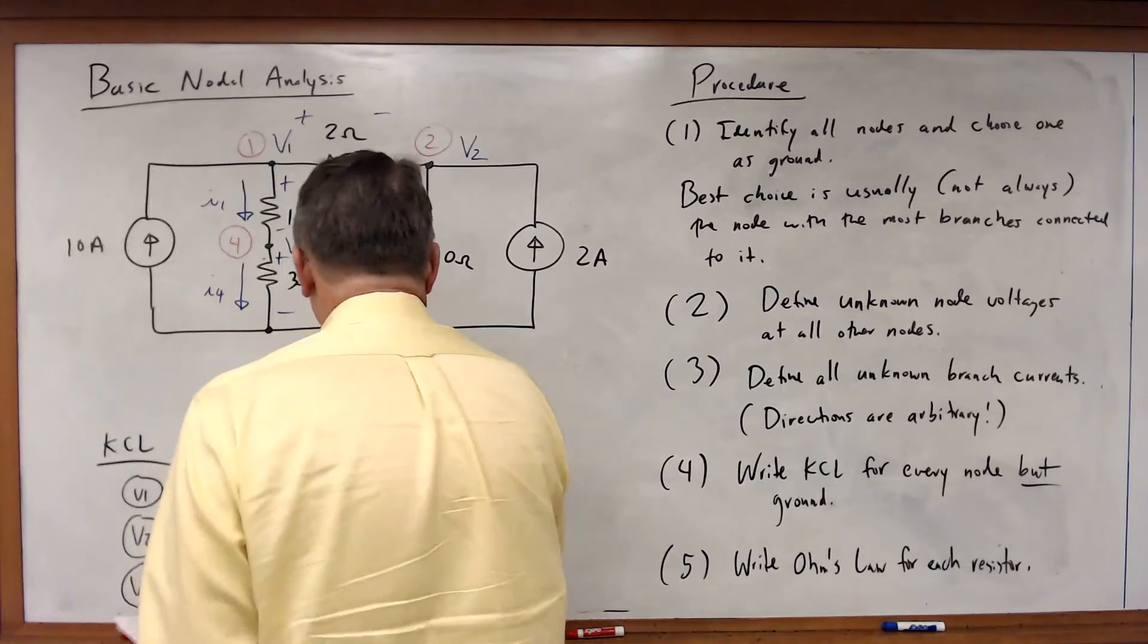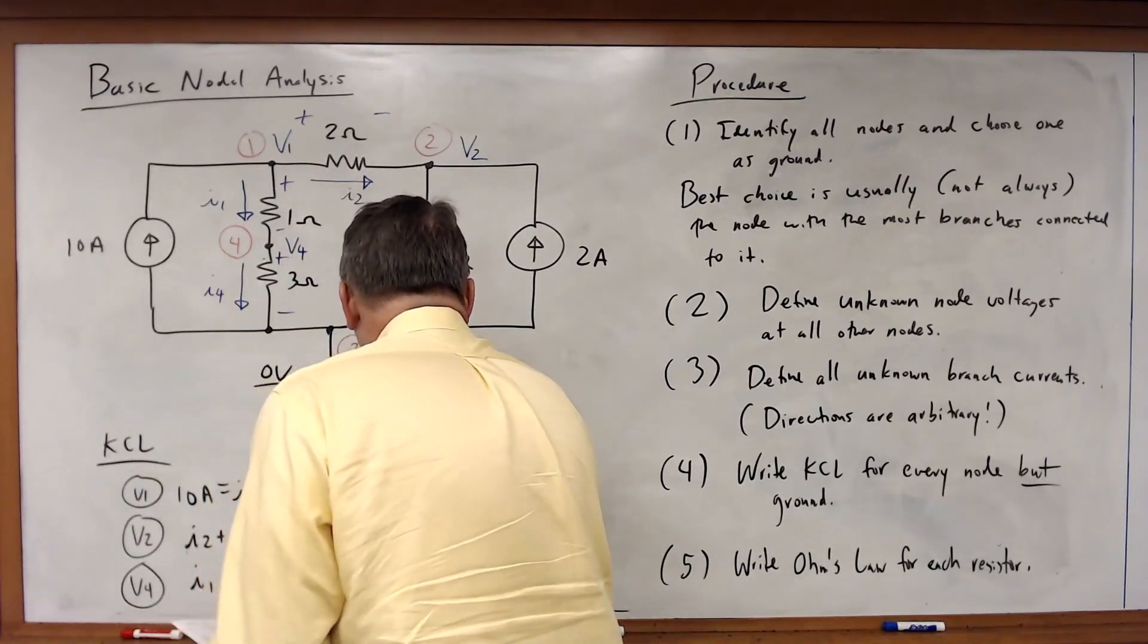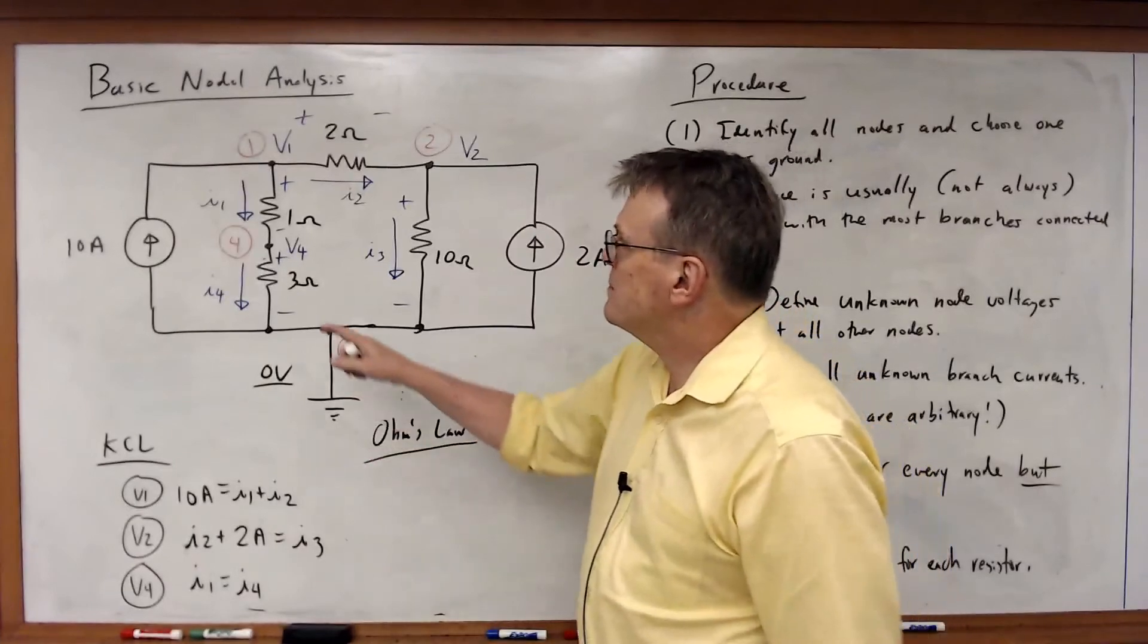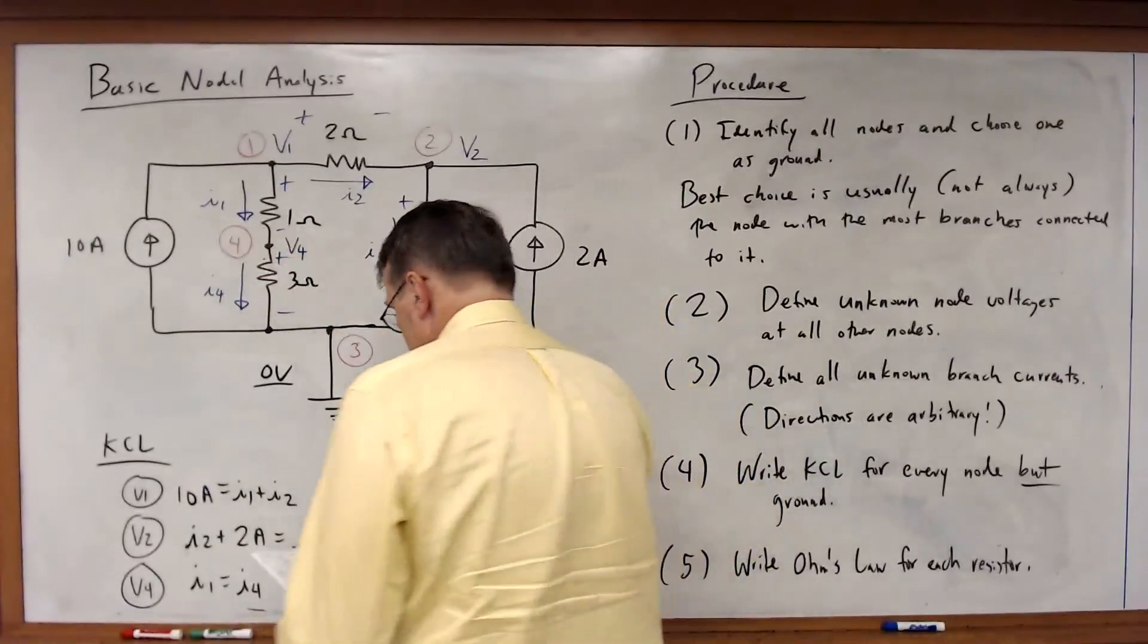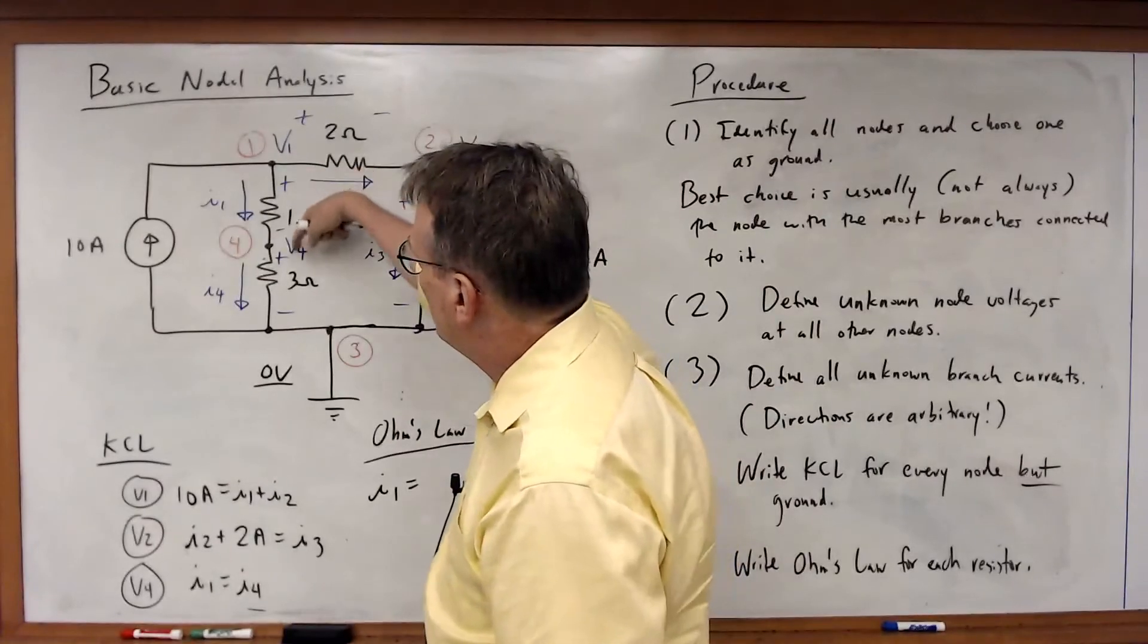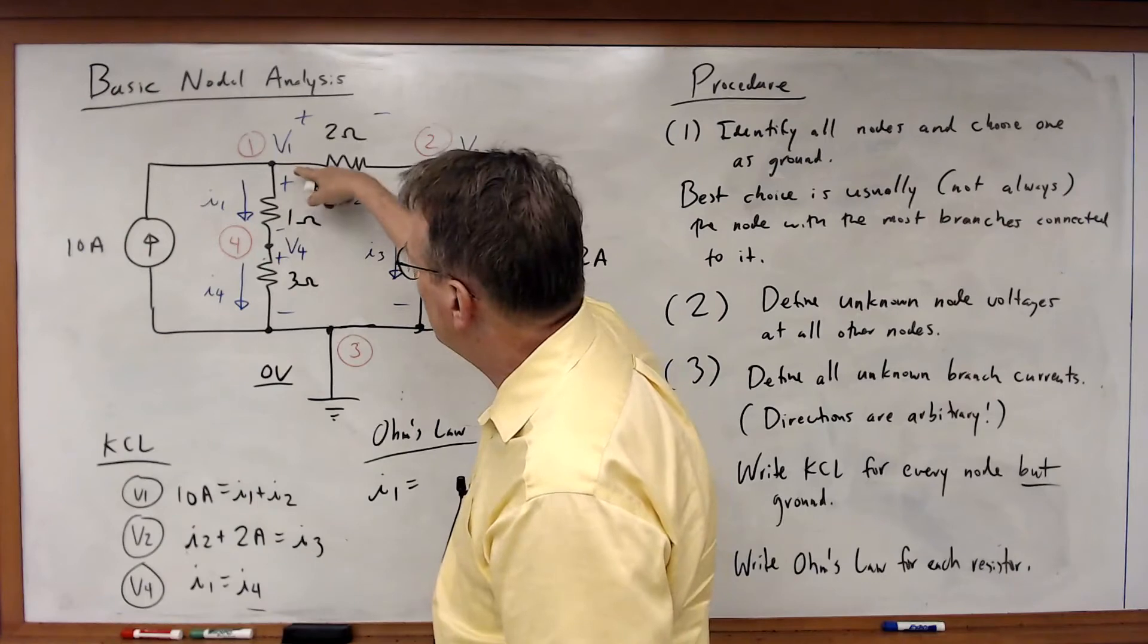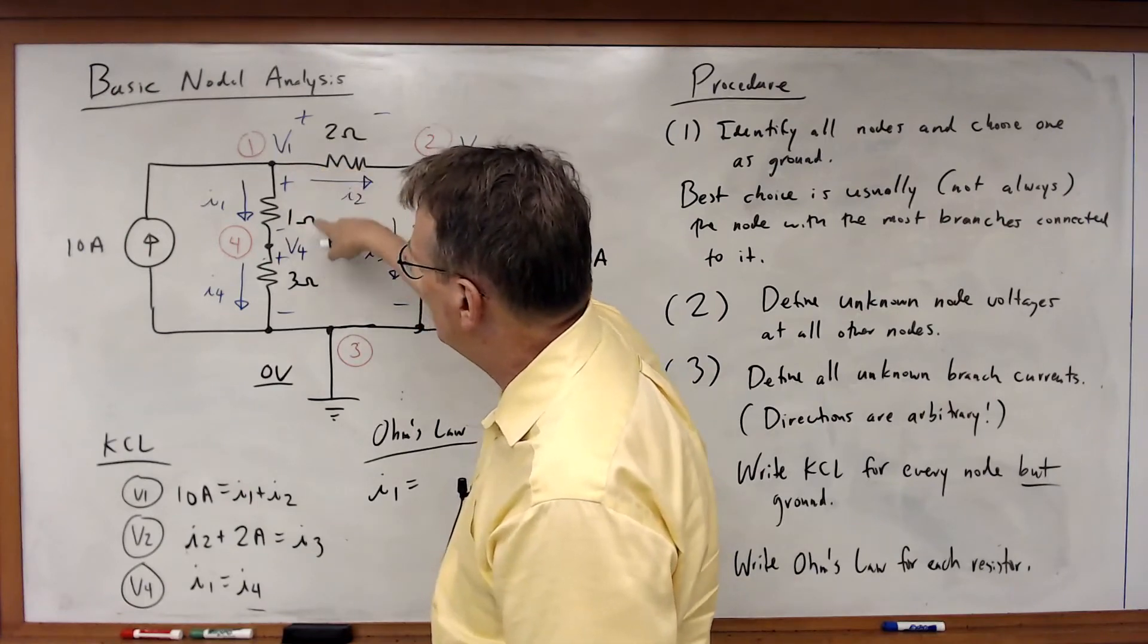So for Ohm's Law, I'll get the following. Here, I1 is equal to the voltage across the resistor divided by 1, and that voltage is V1 minus V4 over 1.